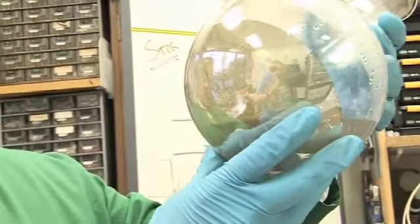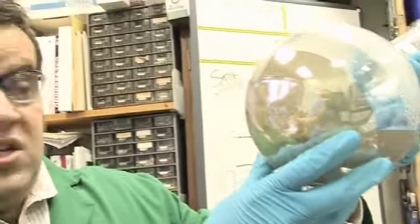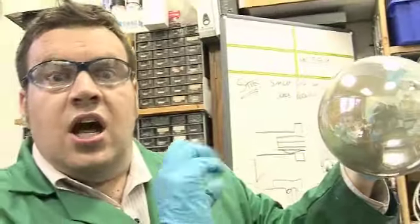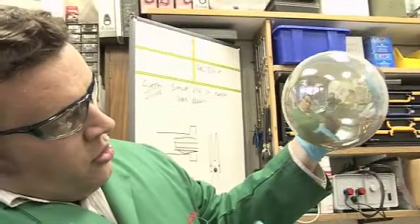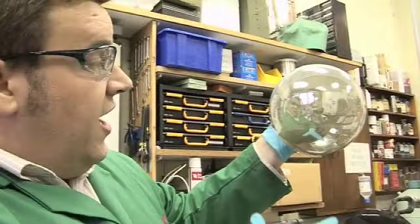So we've reduced the silver from the salt, the diamine complex, to silver zero or metallic silver, which has then precipitated and covered the glass. Perfect mirror that we formed on the inside of this flask.